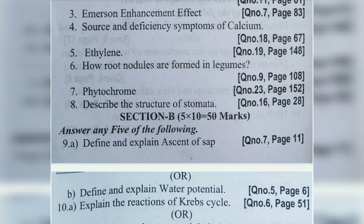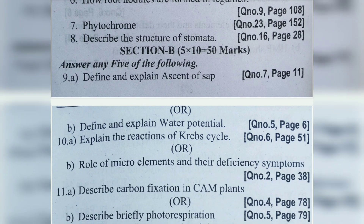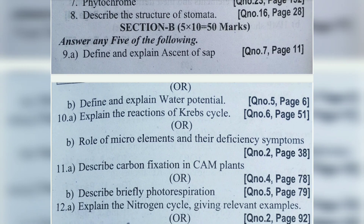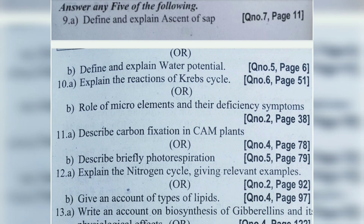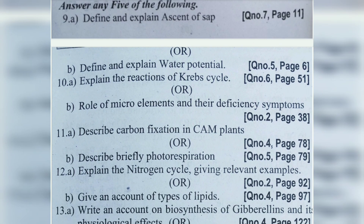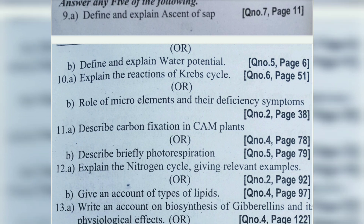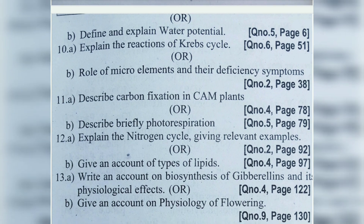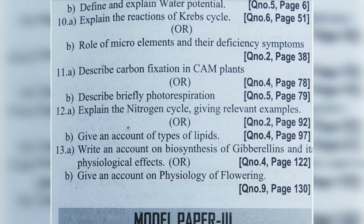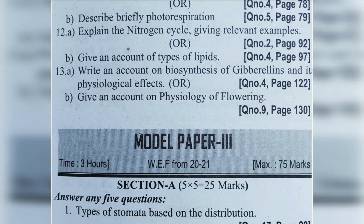Model Paper 2 long answers: Question 10a: explain the reactions of Krebs cycle. Question 10b: role of micro elements and deficiency symptoms. Question 11a: describe carbon fixation in CAM plants. Question 11b: describe briefly photorespiration. Question 12a: explain the nitrogen cycle with relevant examples. Question 12b: give an account of types of lipids. Question 13a: write an account on biosynthesis of gibberellins and its physiological effects. Question 13b: give an account on physiology of flowering.